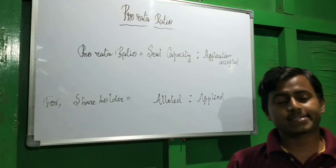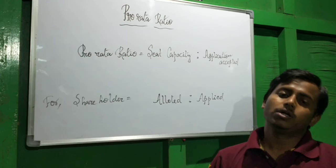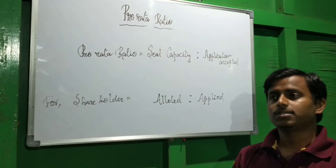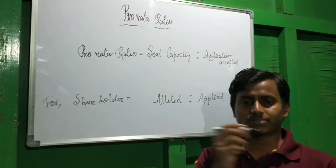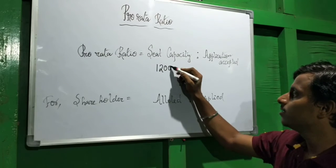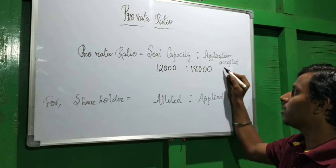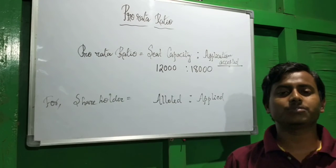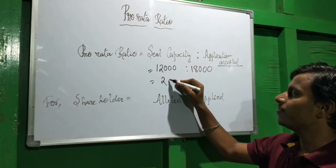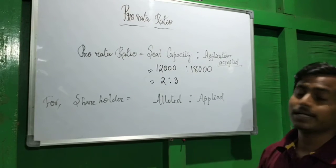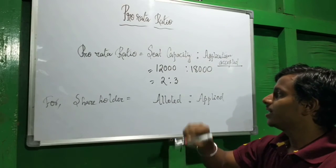Suppose the seat capacity was 12,000 shares, applications were received for 20,000 shares, and we have accepted 18,000 shares. So the ratio is 12,000 is to 18,000 — not 20,000, because we use accepted, not received. Simplifying: 6 × 2 = 12 and 6 × 3 = 18, so the ratio is 2 is to 3.